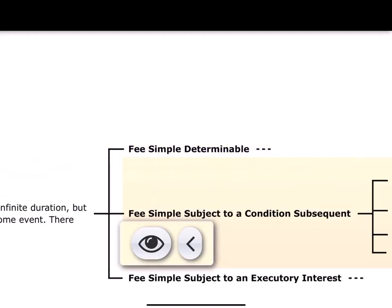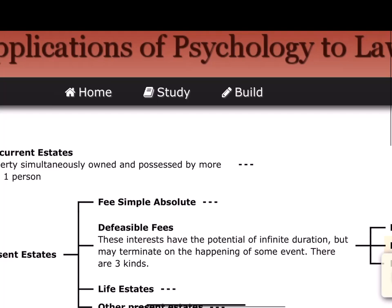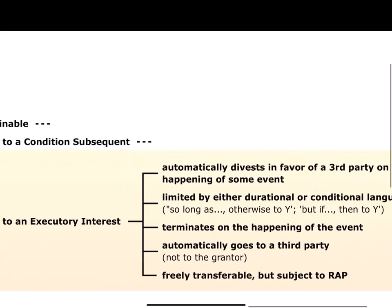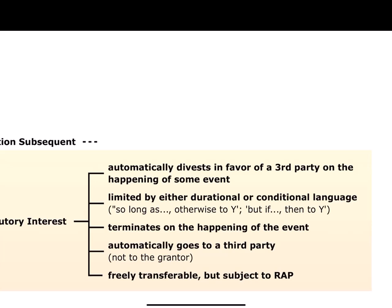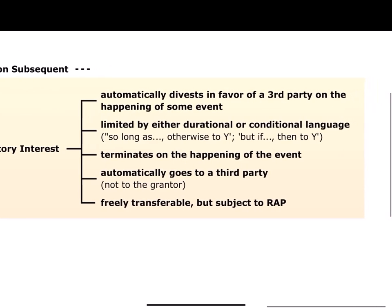What I think we have is not a fee simple subject to a condition subsequent — that one doesn't end until the grantor affirmatively demonstrates he's going to terminate it. I think what we have is a fee simple subject to an executory interest: it automatically divests in favor of a third party on the happening of some event. Here it's that the property is used as anything but a residence. It terminates automatically — not back to the grantor. But it's subject to the rule against perpetuities.